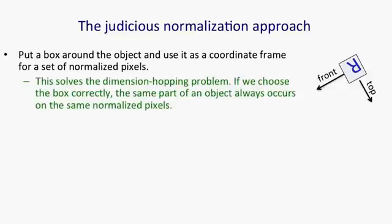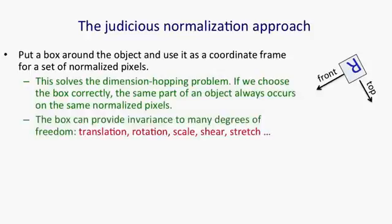Putting a box around a rigid shape solves the dimension hopping problem. It gets rid of the effect of changes in viewpoint. If we choose the box correctly, the same part of an object will always occur on the same normalized pixels. It doesn't have to be a rectangular box. We can provide invariance to not only translation, rotation, and scale, but also things like shear and stretch.